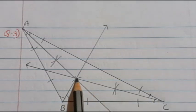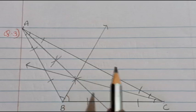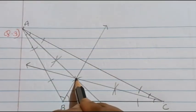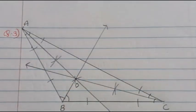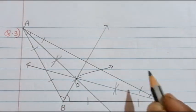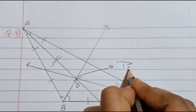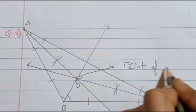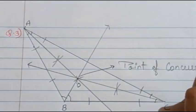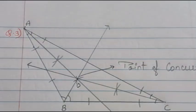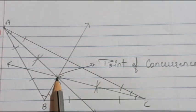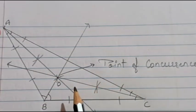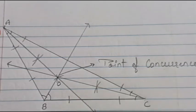These intersecting lines meet at one point, and I will name it as point O. This point is known as the point of concurrence. So we found out the point of concurrence in the obtuse angled triangle. Now we are supposed to draw the second triangle, that is the right angled triangle.